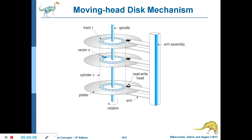The arm assembly holds the read/write heads — the black square component is the read/write head. Every platter has two read/write heads, one for each side. Each arm holds a read/write head so information can be written or read from both sides of the disk. The central pole is called the spindle, and when it rotates, all the platters rotate along with it.